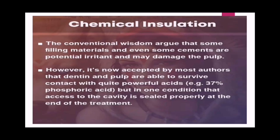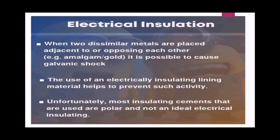Chemical insulation: conventional wisdom argues that some filling materials and even some cements are potentially irritant and may damage the pulp. However, it is now accepted by most authors that dentine and the pulp are able to survive contact with quite powerful acids — for example, 37% phosphoric acid — on the condition that access to the cavity is sealed properly at the end of treatment.